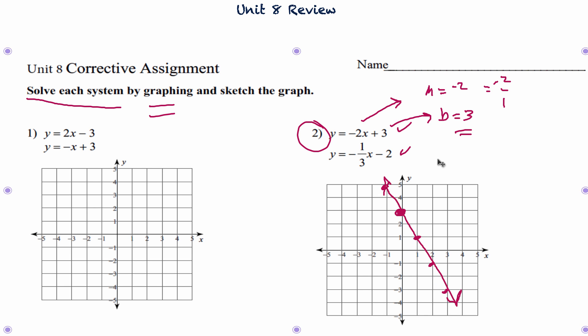So then we're going to find the other line here. Let's change that color up. We'll go purple. We need to start with B this time. B equals negative 2 and then M equals negative 1 third.